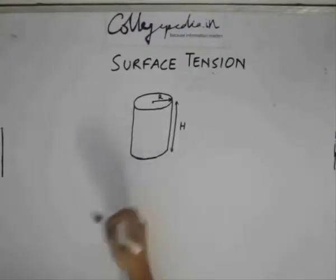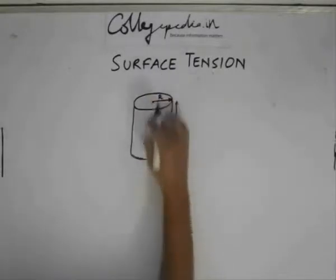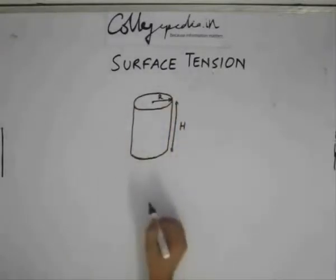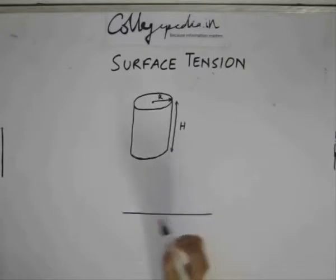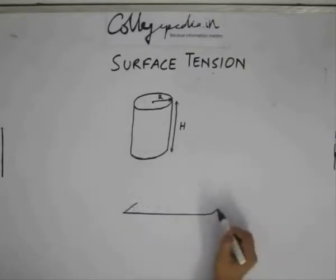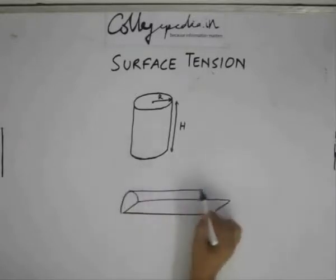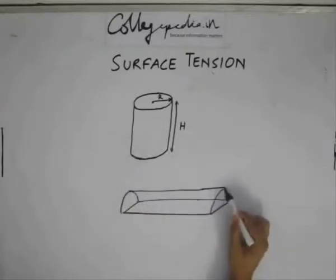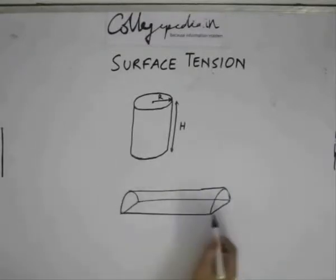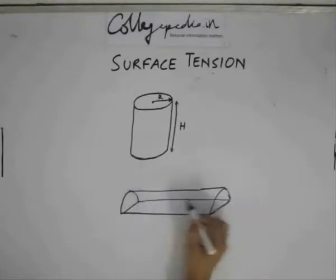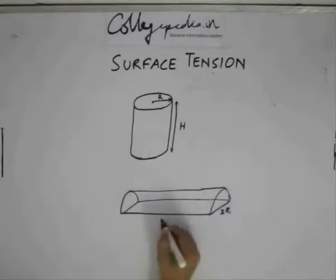So what we have or what we can do is take the half portion of the cylinder. Say I am considering only this, considering a three dimensional view of the cylinder, say something of this sort. Let me consider this face, the rectangular face. This is basically 2r, this is h.